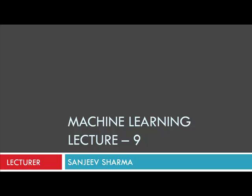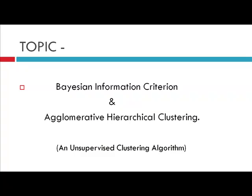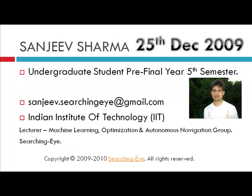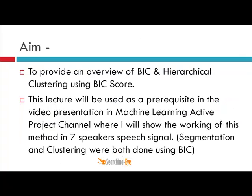Welcome back to lecture number 9 in the machine learning section. This lecture is about Bayesian Information Criterion and agglomerative hierarchical clustering, which is basically an unsupervised clustering algorithm.